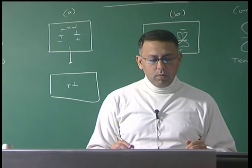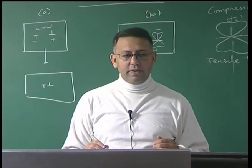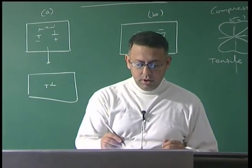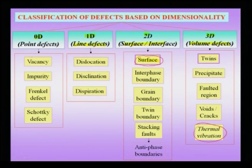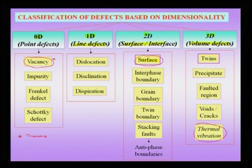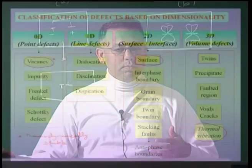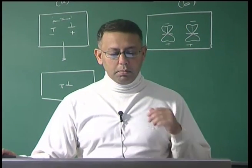To briefly overview point defects, line defects, and volume and surface and interface defects: one other unavoidable defect in the thermodynamic sense is the zero-dimensional defect of vacancy. A vacancy is a missing atom from a lattice position — for instance, a copper atom or ion could be missing from its lattice position. This missing atom causes internal energy in terms of broken bonds to the material.